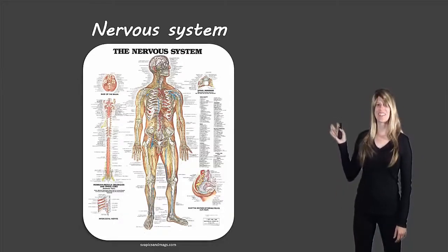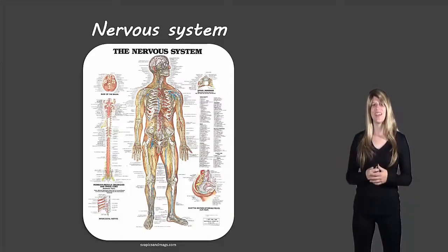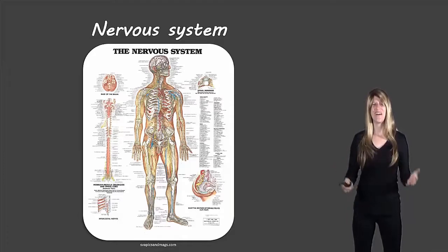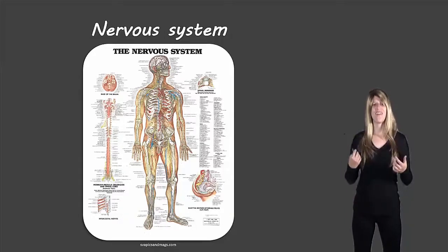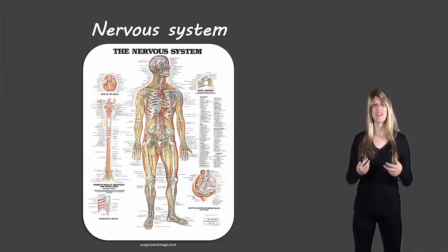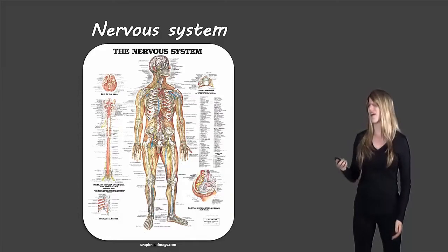I find this picture interesting — it shows all of the different nerves in the body. Obviously you don't need to know all the names of the different nerves, but it is interesting seeing how all these nerves go throughout our body and how each body part has many different types of nerves to help us move around.